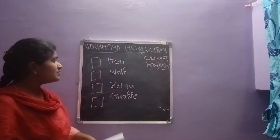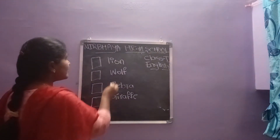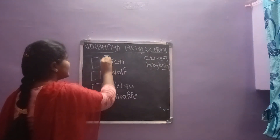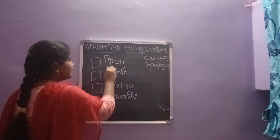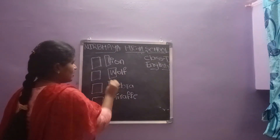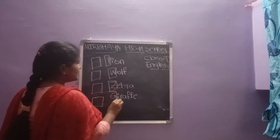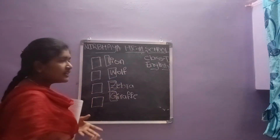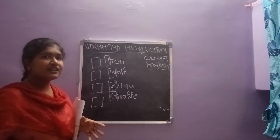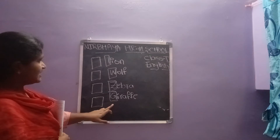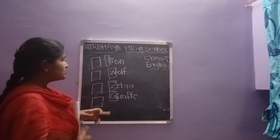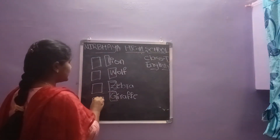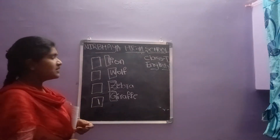Which letter comes first? See children, we have to check the first letters only. See all the first letters: L, W, Z. Which letter comes first? A, B, C, D, E, F, G. So G letter comes first. This is number one position.